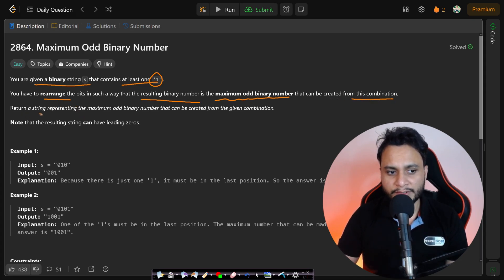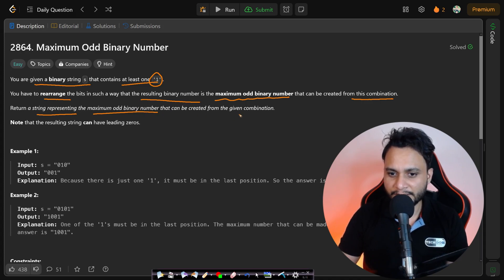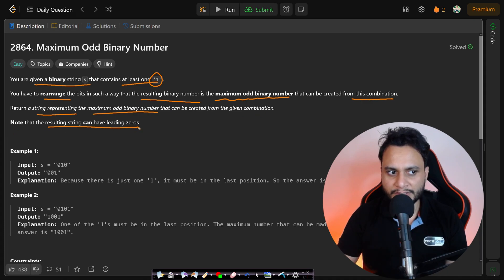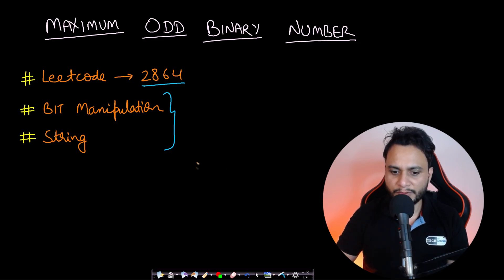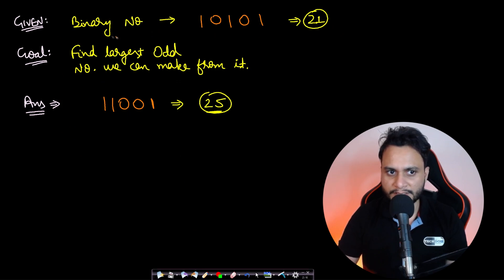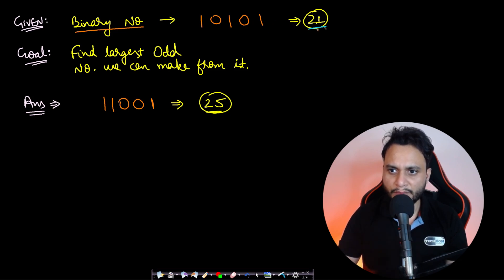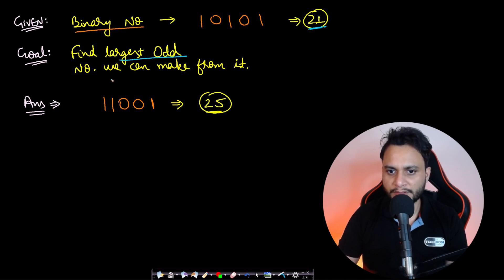You are required to return a string representing the maximum odd binary number that can be created from the given combination. Note that the resulting string can have leading zeros. For example, given the binary number 10101, which is equivalent to 21 in decimal, you need to convert it to the largest odd number and return it as an answer.